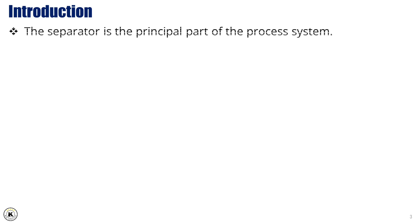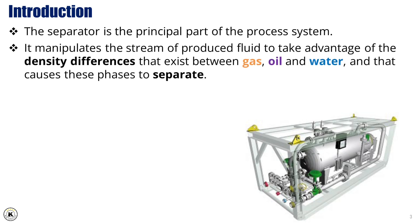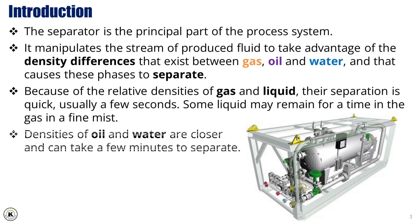The separator is the principal part of the process system. It manipulates the stream of produced fluid to take advantage of the density differences that exist between gas, oil and water, and that causes these phases to separate. Because of the relative densities of gas and liquid, their separation is quick, usually a few seconds. Some liquid may remain for a time in the gas in a fine mist. Densities of oil and water, however, are closer and can take a few minutes to separate.